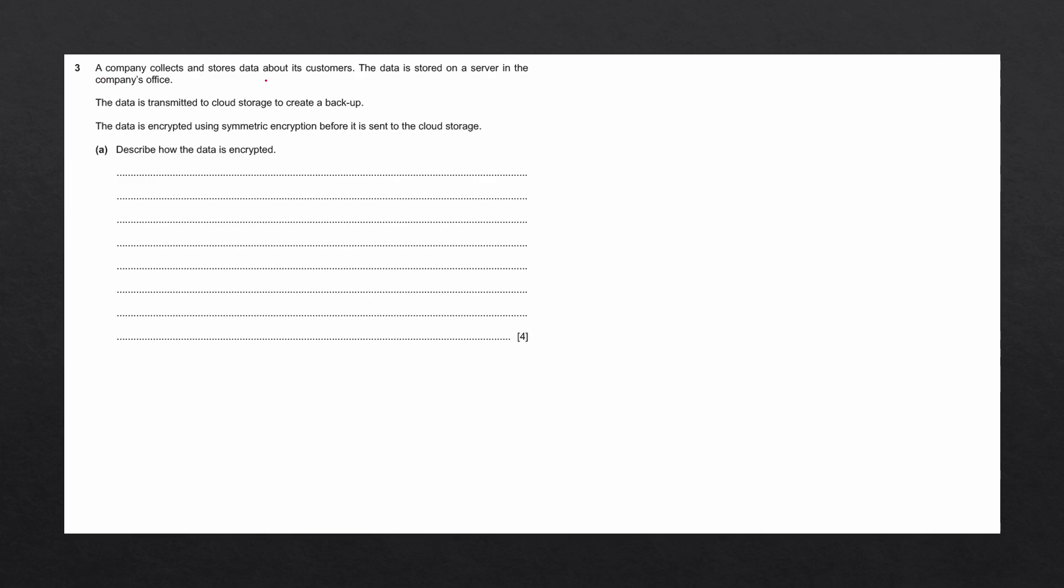A company collects and stores data about its customers. The data is stored on a server in the company's office. The data is transmitted to cloud storage to create a backup. The data is encrypted using symmetric encryption before it is sent to the cloud storage. The question says, describe how the data is encrypted.